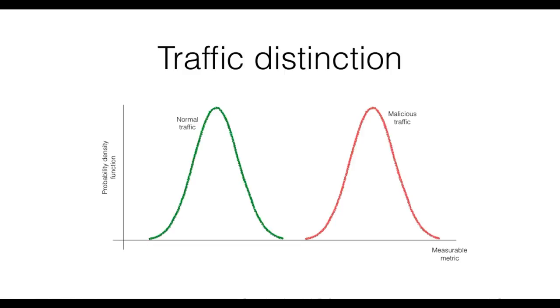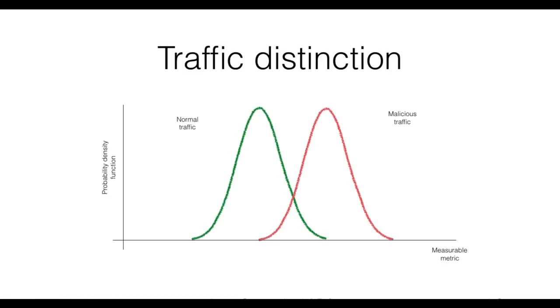Unfortunately for us, the real world is rarely that easy, and most likely the traffic samples will be distributed in this way. The normal traffic distribution and the malicious traffic distribution will partially overlap, which means that there is a subset of the traffic for which we will not be able to say, based on our metric, if it is malicious or benign. It will simply look the same.